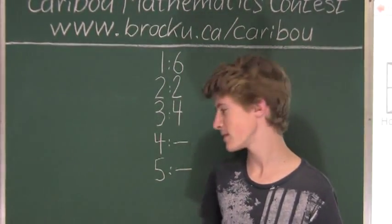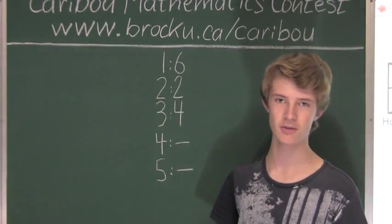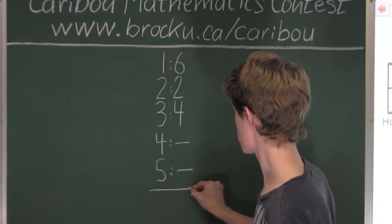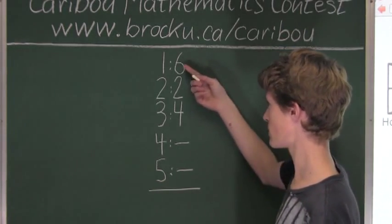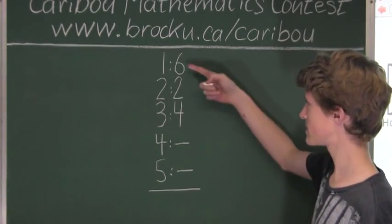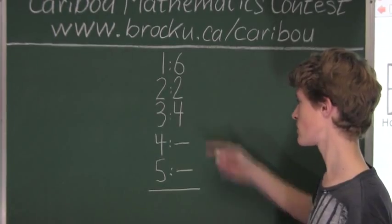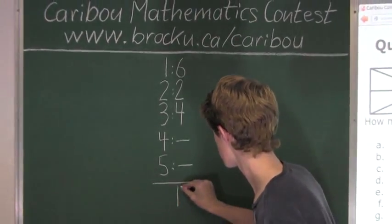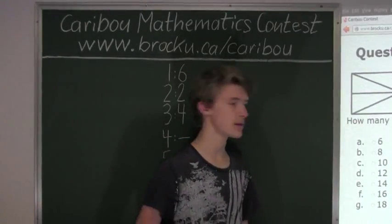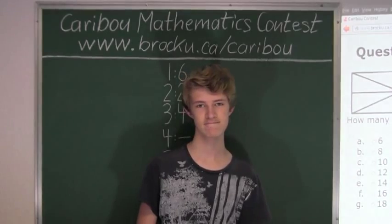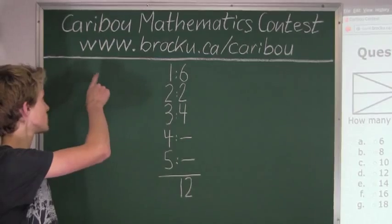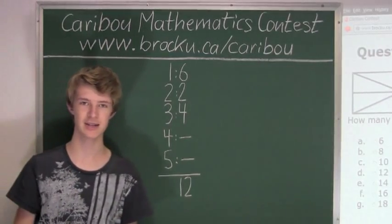Finally, since we know there can't be six, because there are only six single triangles in the whole diagram, we will now add up all the numbers. So we have six plus two is eight, plus four is twelve. So we know that in this diagram, there are twelve triangles of any size. If you'd like to know more about this contest, please feel free to visit our website at www.brocku.ca/caribou.